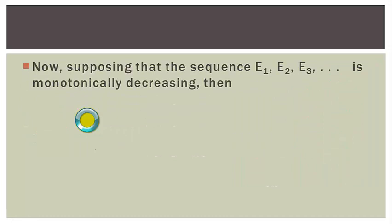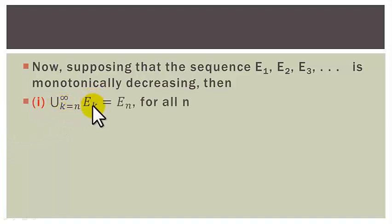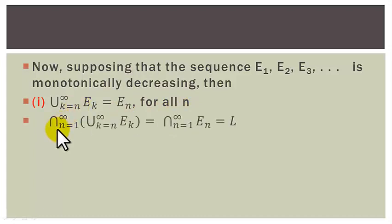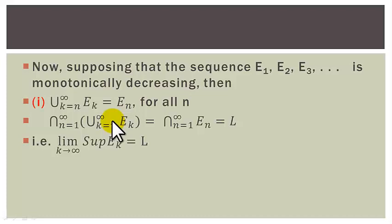Next, let us suppose that the sequence of sets E1, E2, E3 and so on is a monotonically decreasing sequence. Then: (1) the union of Ek as k goes from n to infinity is equal to En for all n. The intersection as n goes from 1 to infinity of this set is equal to the intersection of En as n goes from 1 to infinity. Let this intersection be the set L. So the limit supremum of Ek as k tends to infinity is equal to L.